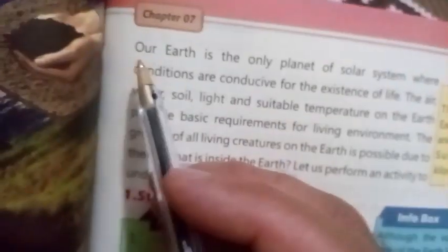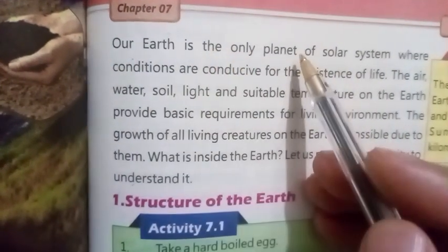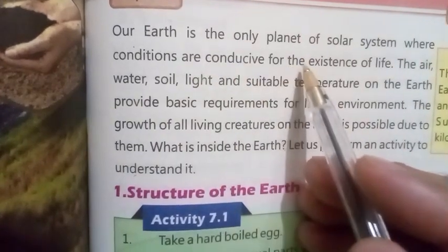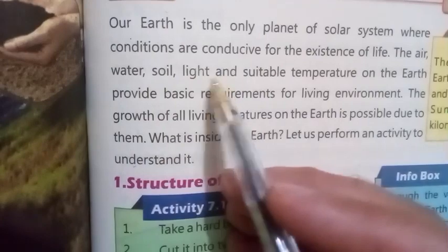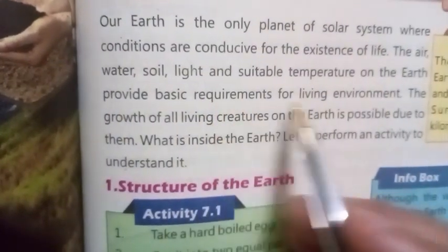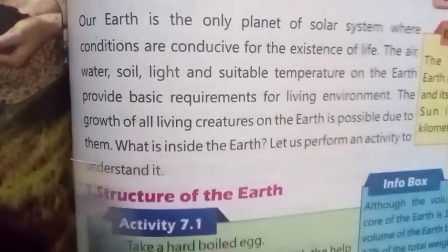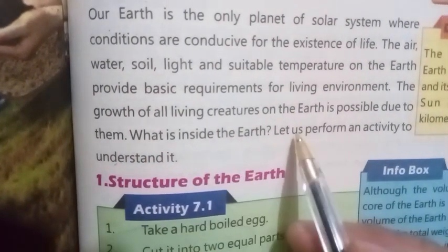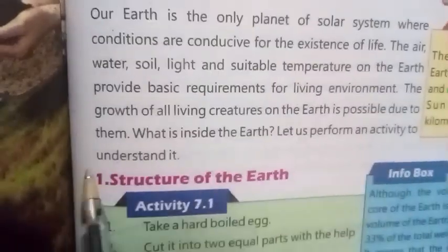Bismillahirrahmanirrahim. Chapter number seven: Structure of the Earth. Our earth is the only planet of the solar system where conditions are conducive for the existence of life. The air, water, soil, light, and suitable temperature on the earth provide basic requirements for a living environment. The growth of all living creatures on the earth is possible due to them.